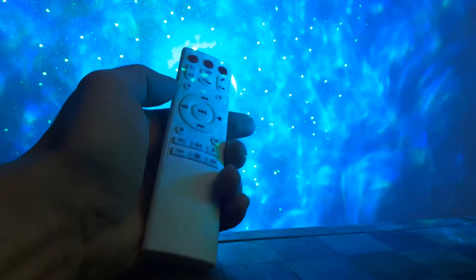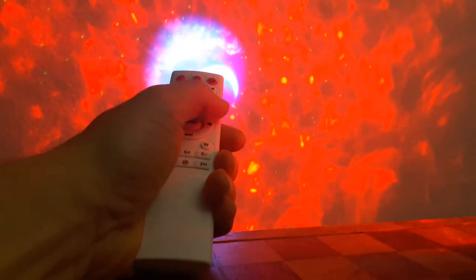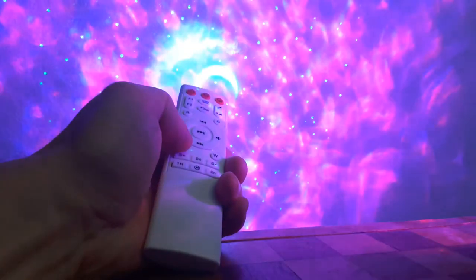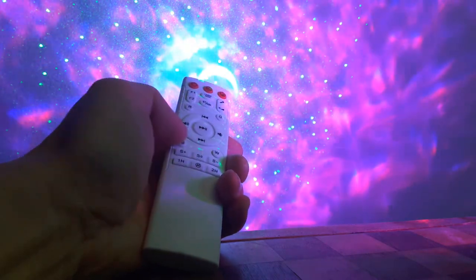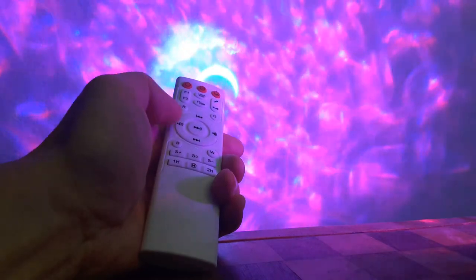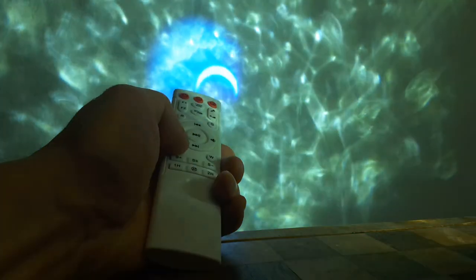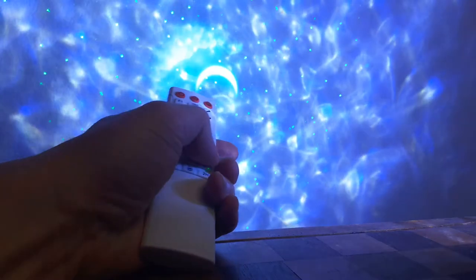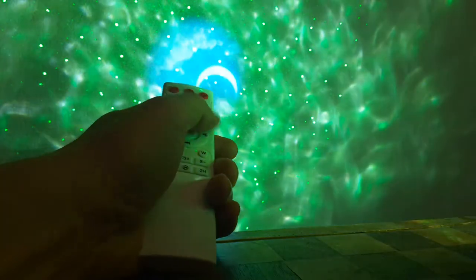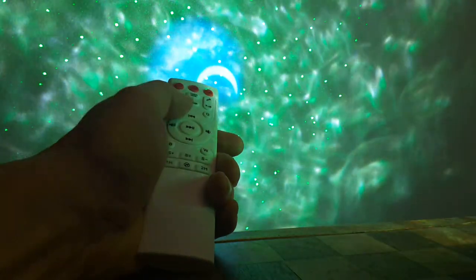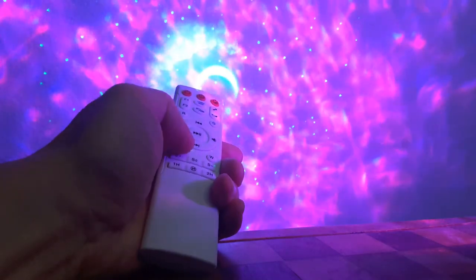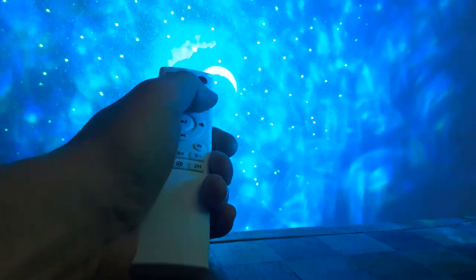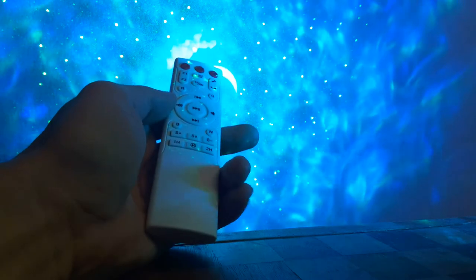Then you've got RGBW and you can choose any two. So you can do RB to get purple. You can turn the animation on. It does make a little bit of noise because there's a motor that rotates. You can do white and white, and white and blue, white and green, white and red, red and green, red and blue, blue and green. So those are the main LED colors.